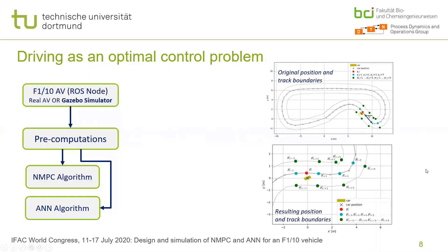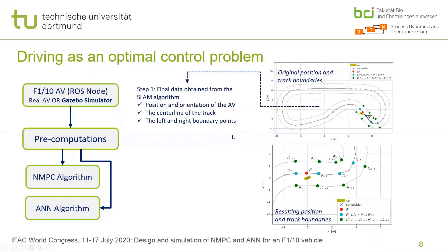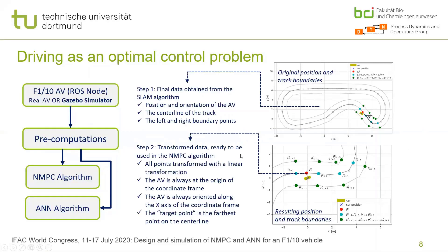This transformation greatly simplifies the work, not only for the NMPC algorithm but also for the ANN algorithm. We also compute a target point for the optimization, which is always going to be the farthest away point that the SLAM algorithm can see on the center line. We will get to that in a later slide.